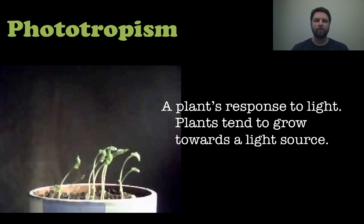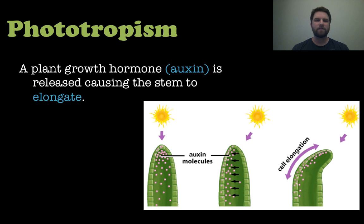The first one, phototropism — photo means light, so that is a plant's response to light. Plants tend to grow towards a light source because sunlight is a major reactant in photosynthesis. The way they achieve this is by the use of a growth hormone called auxin, which is released on the opposite side of the stem where the sunlight is. If the sunlight is coming from the right side, the auxin molecules are released on the left side, causing the stem to elongate and bend towards the sunlight.